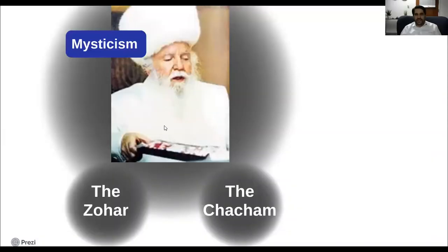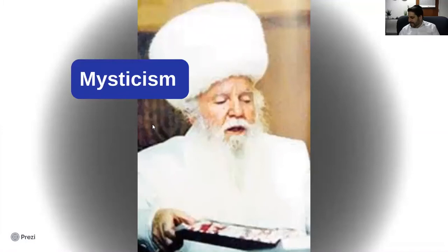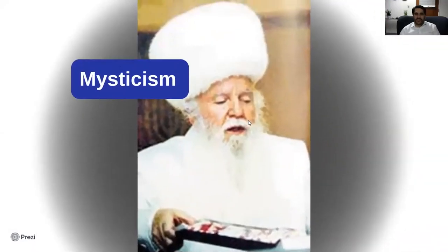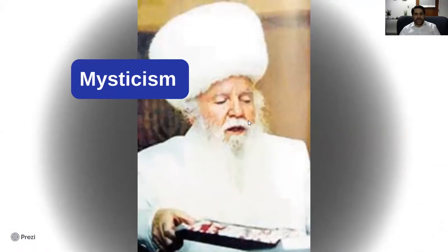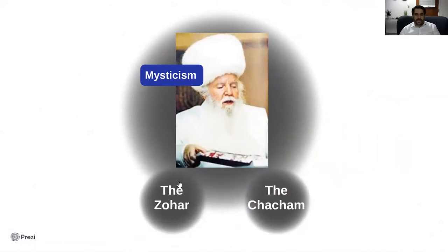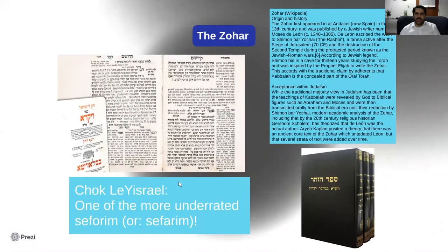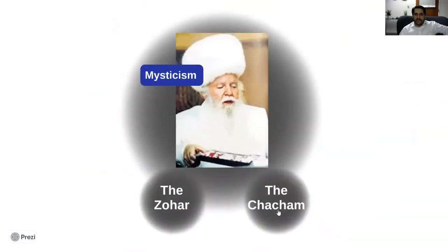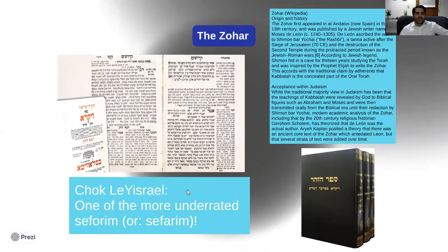This is a rabbi from a Kabbalistic yeshiva where they studied Jewish mysticism. Look what he's wearing - he's wearing all white, even a white shtreimel. In Jewish mysticism, there's a thing about wearing white on Shabbat. The Kabbalists sometimes wear white at different intervals - if you see people wearing white on Shabbat, they're often more involved with mysticism. There are two pieces to discuss here: the Zohar and the Hacham.